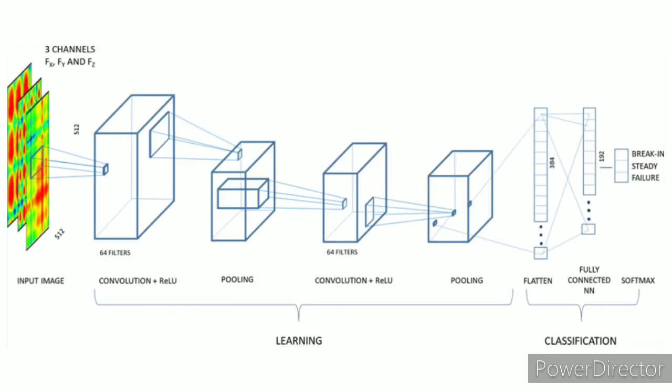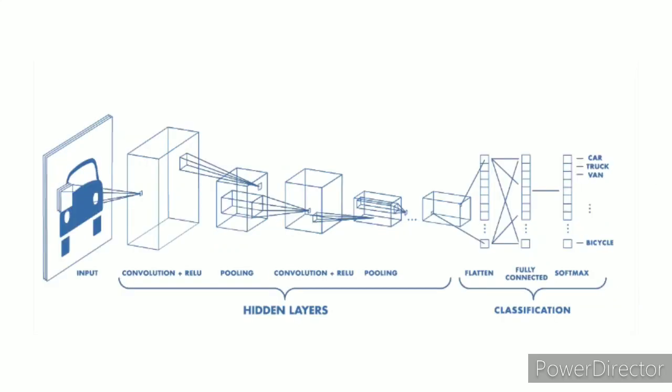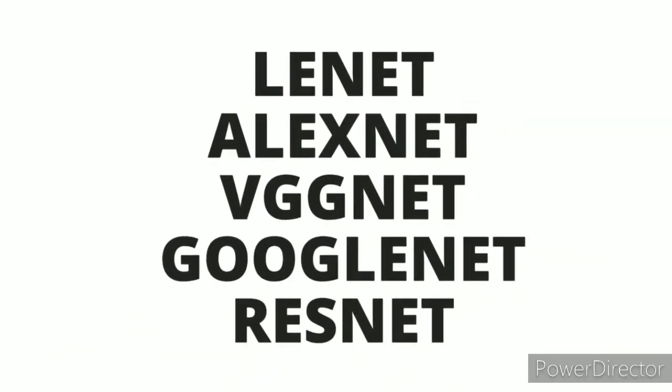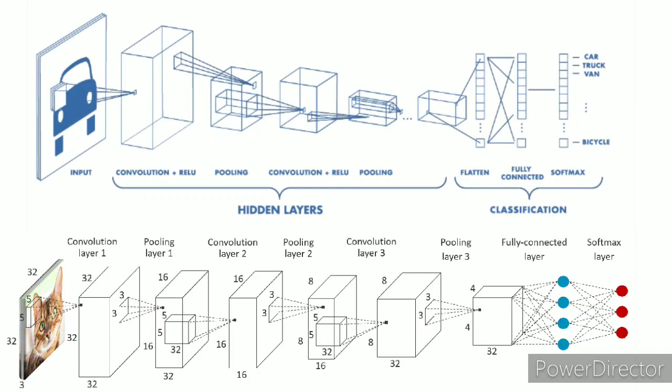Different architectures of CNN. Based on different permutations and combinations of convolutional layers and pooling layers, we have some architectures which are pre-trained on different datasets. They are LeNet, AlexNet, VGGNet, GoogLeNet, ResNet, etc. Some examples of how CNN looks are shown.